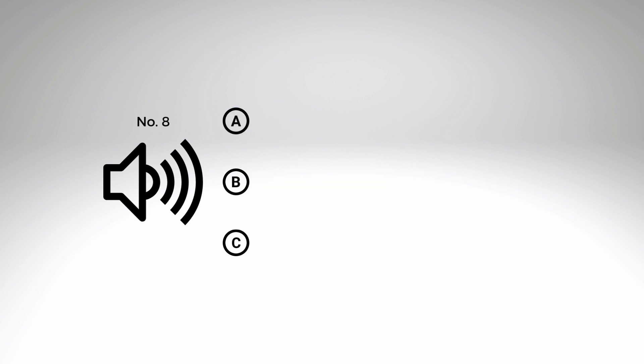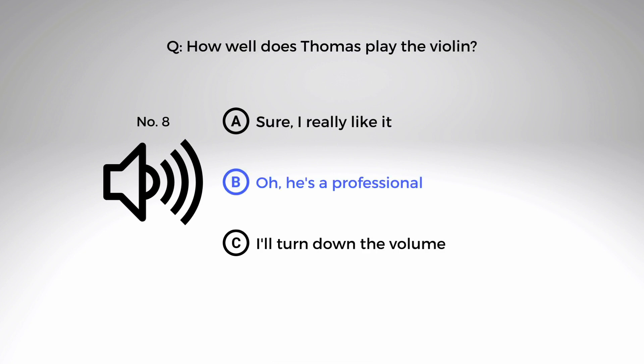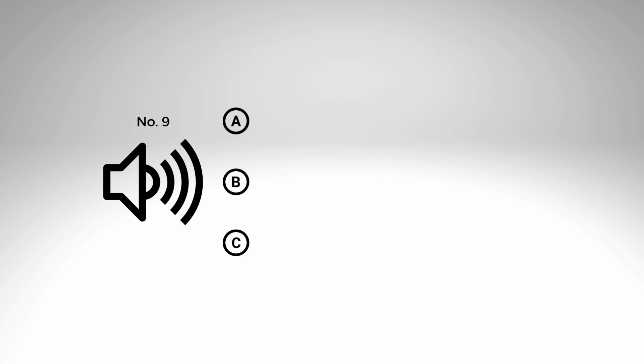Number eight: 'How well does Thomas play the violin?' A. Sure, I really like it. B. Oh, he's a professional. C. I'll turn down the volume. The answer is B — 'Oh, he's a professional.' Be mindful of the distractors in A and C. A would be a response to a yes or no question such as 'Do you like playing the violin?' C would be a response to a declarative sentence such as 'The music is too loud.'